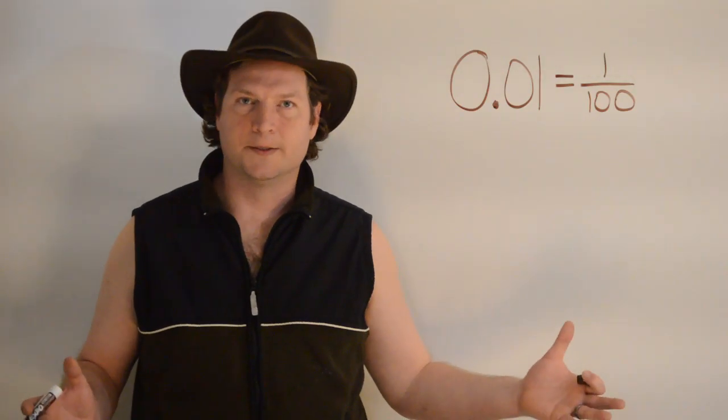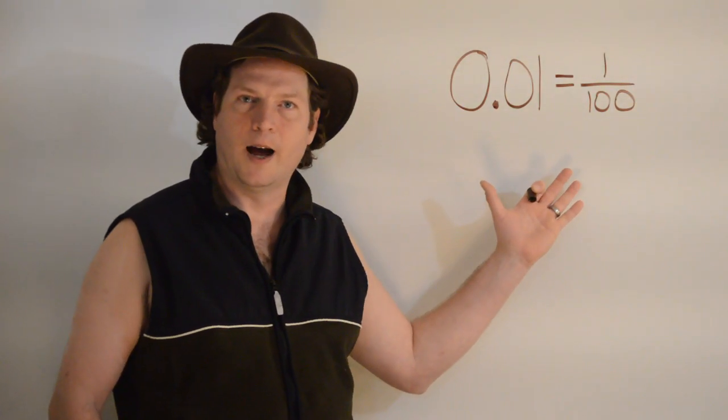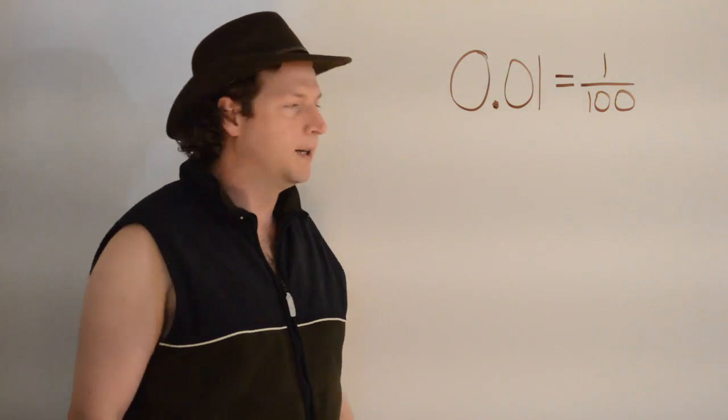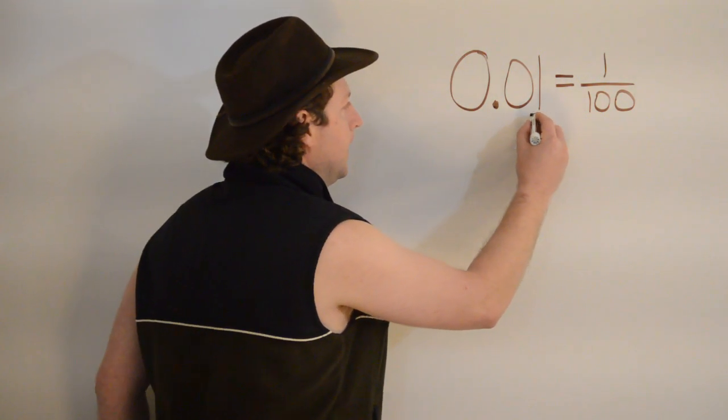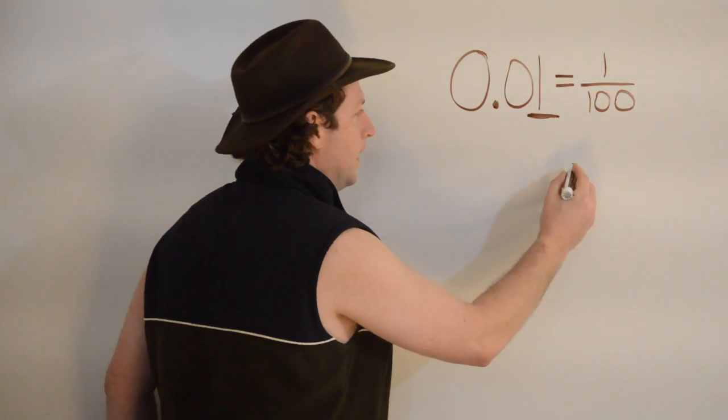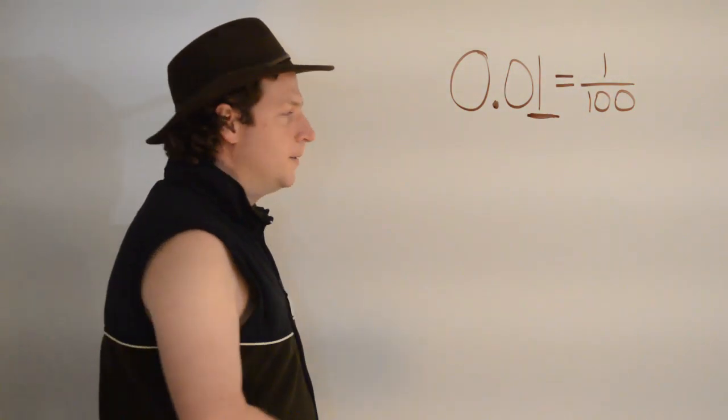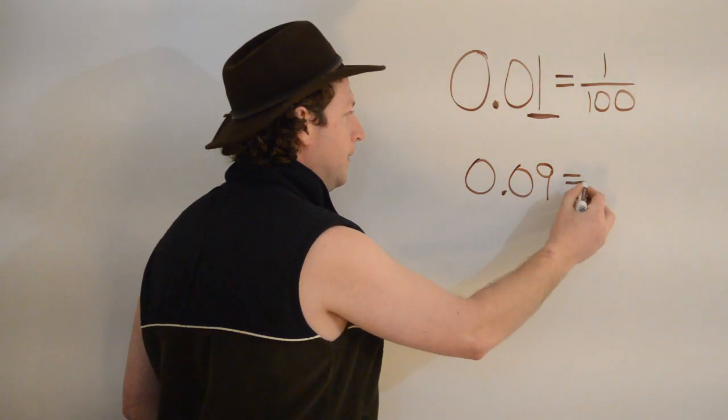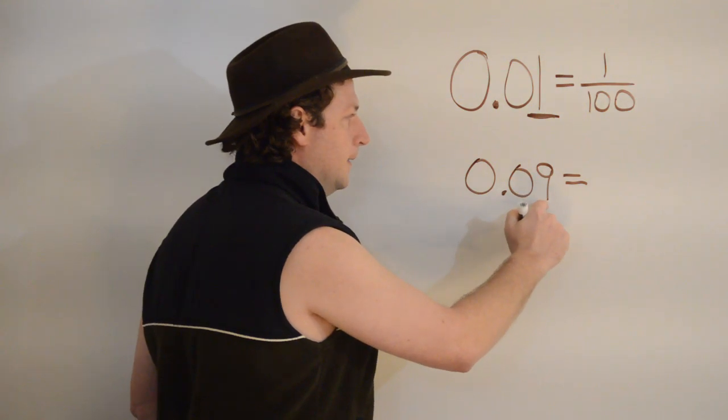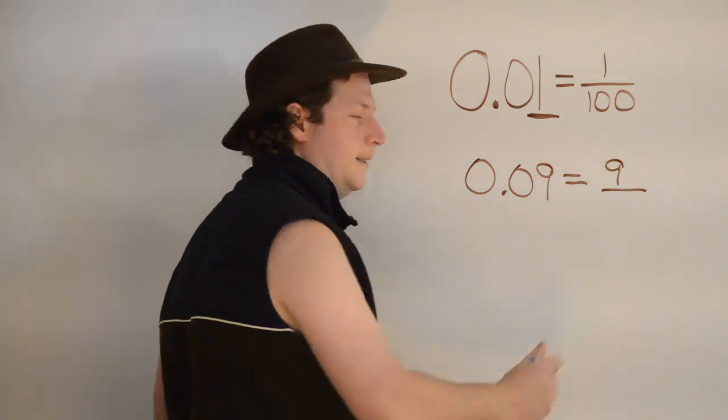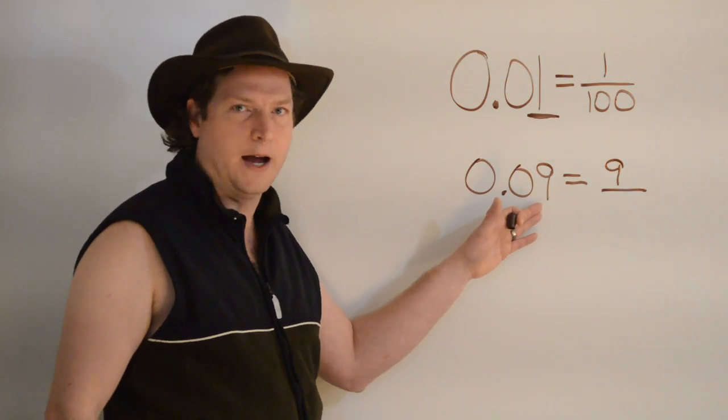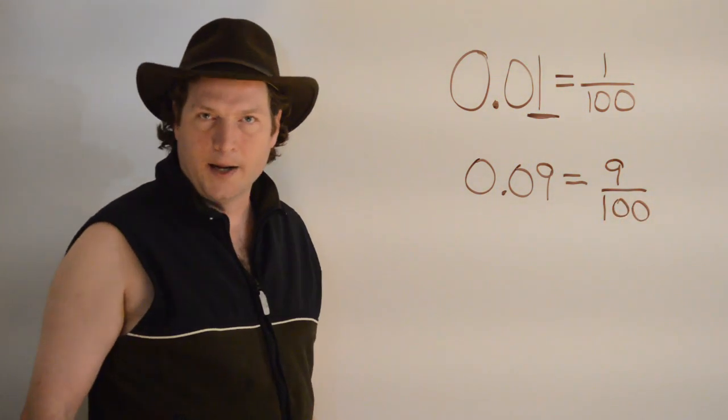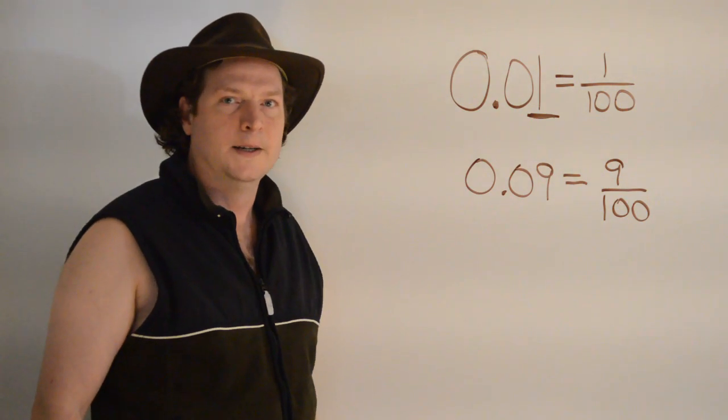With the hundredths place, I have also memorized that point zero one equals one over one hundred. What that tells me is anything in this place value can be written over one hundred. So, if I had zero point zero nine, I know that is equal to nine. And since it's in the hundredths place value, I'm going to use one hundred as my denominator, or bottom number of the fraction.